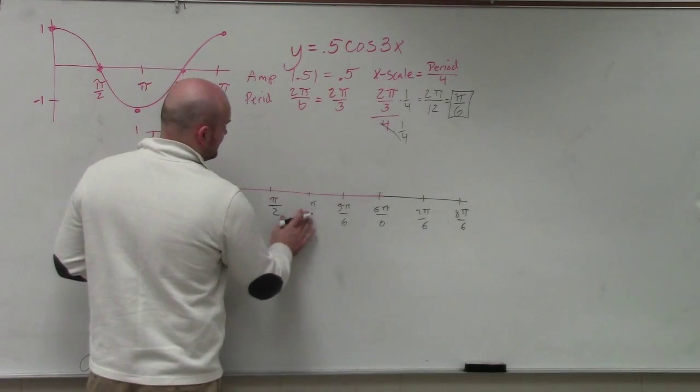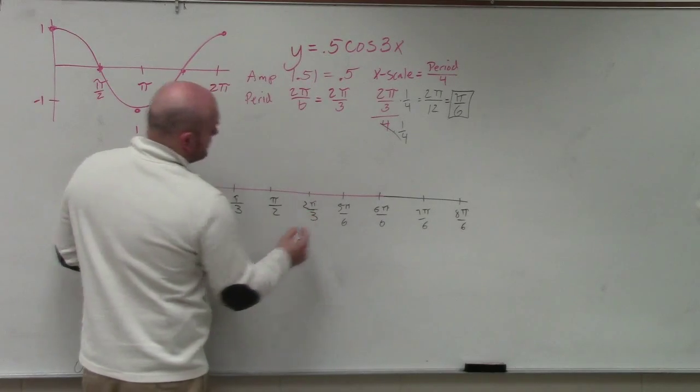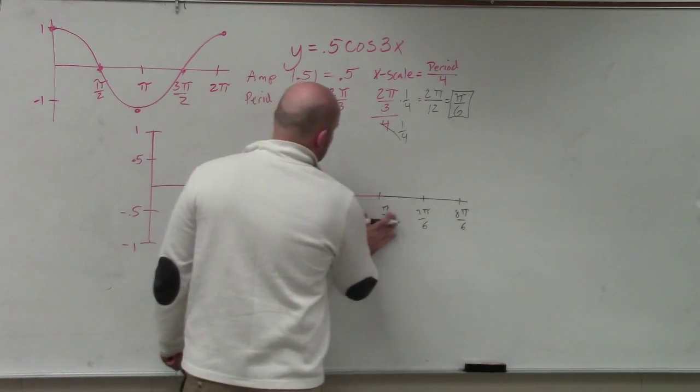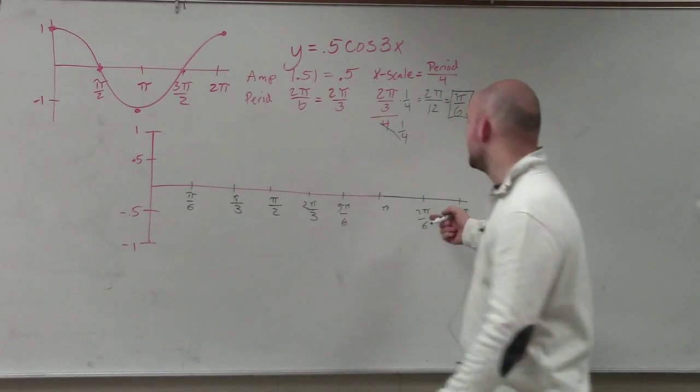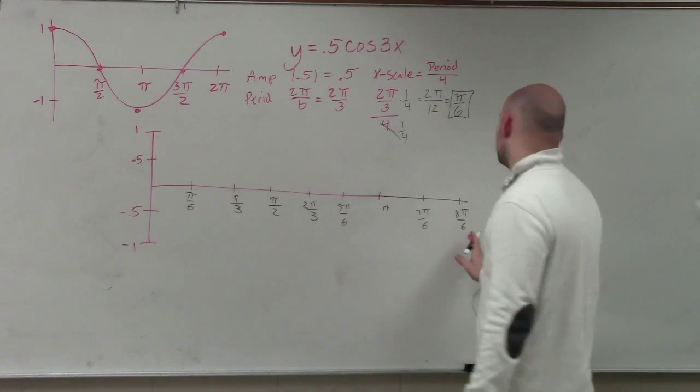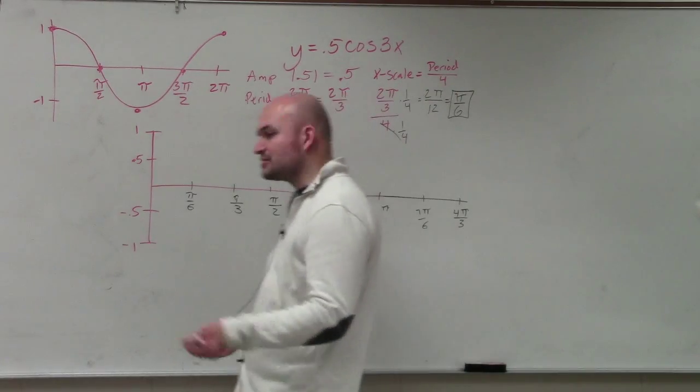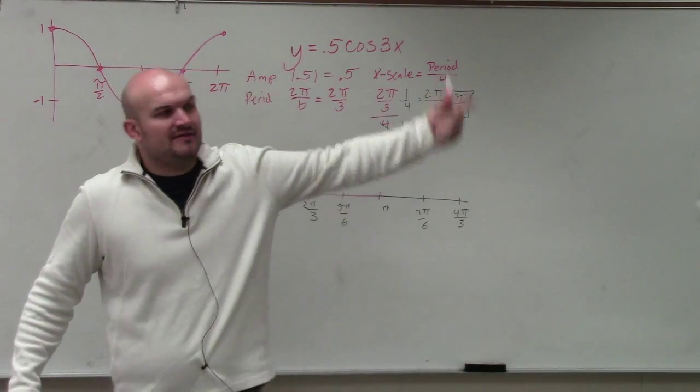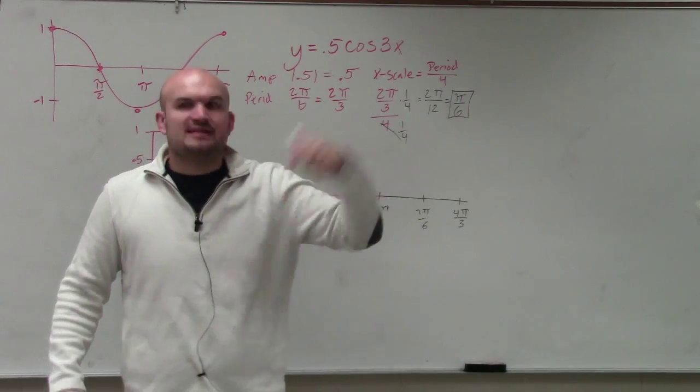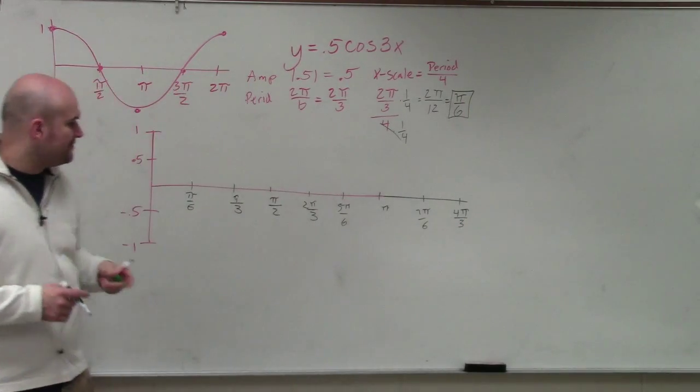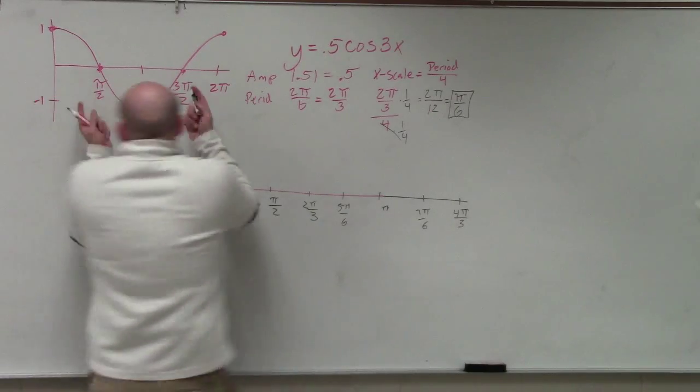This is 2π/3, that is 5π/6, 6π/6 reduces to π, 7π/6, and 8π/6 reduces to 4π/3. If you're getting used to fractions, just add the numerator, keep the denominator the same, and simplify at the end. Once you get used to this, you can do it in your head. Now we know what cosine looks like.